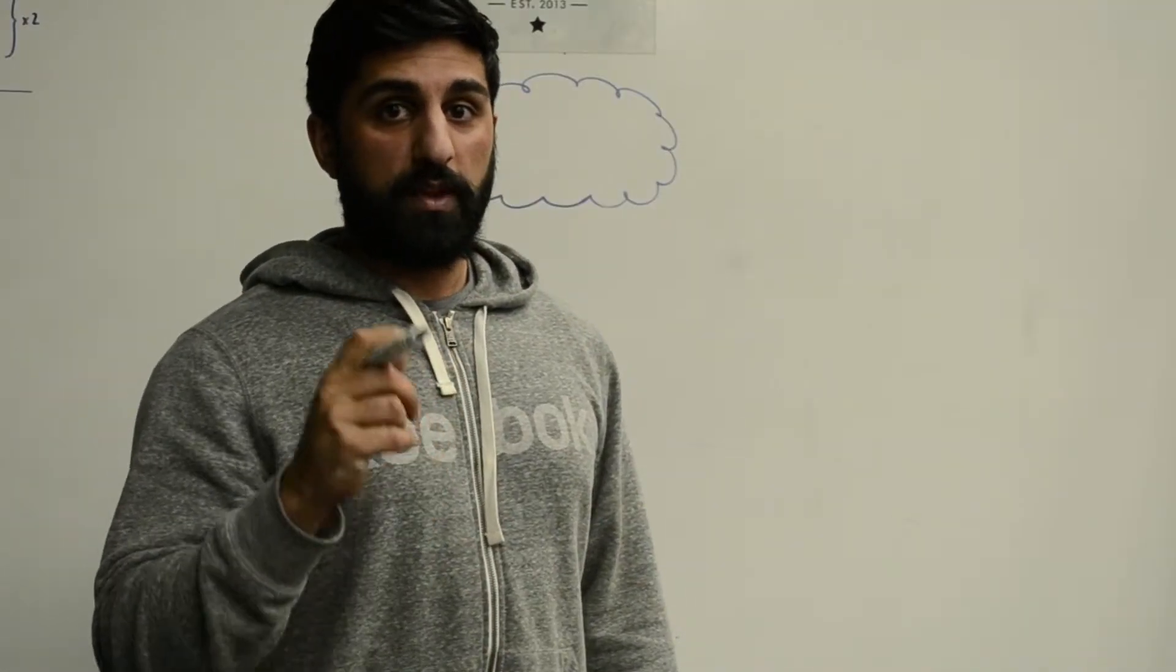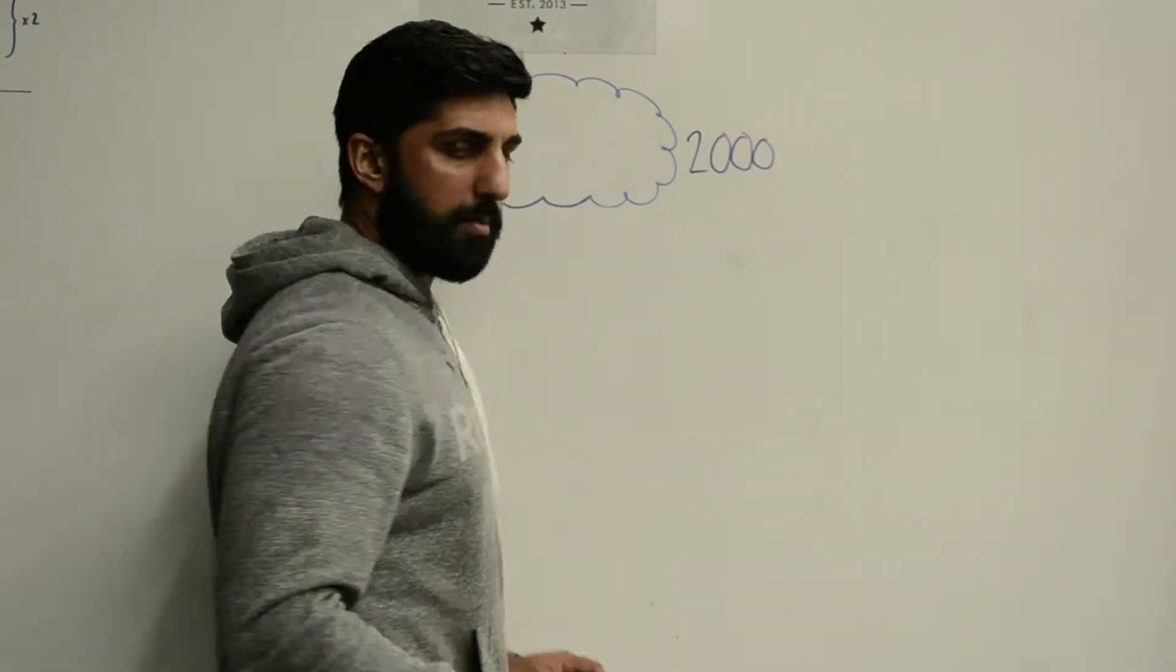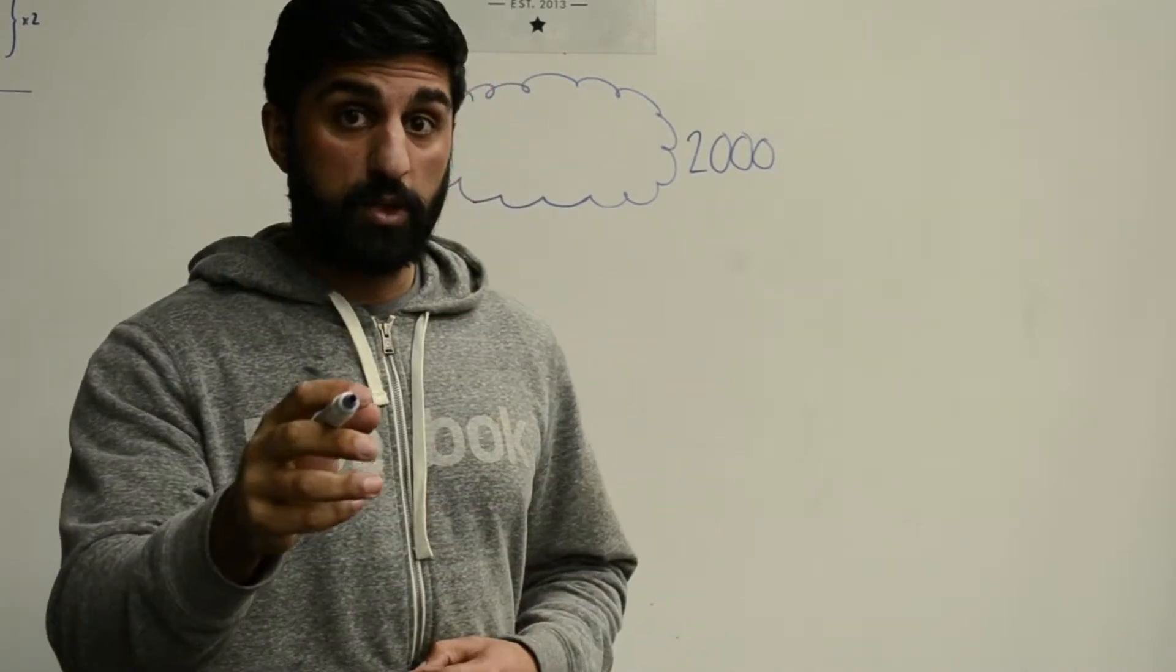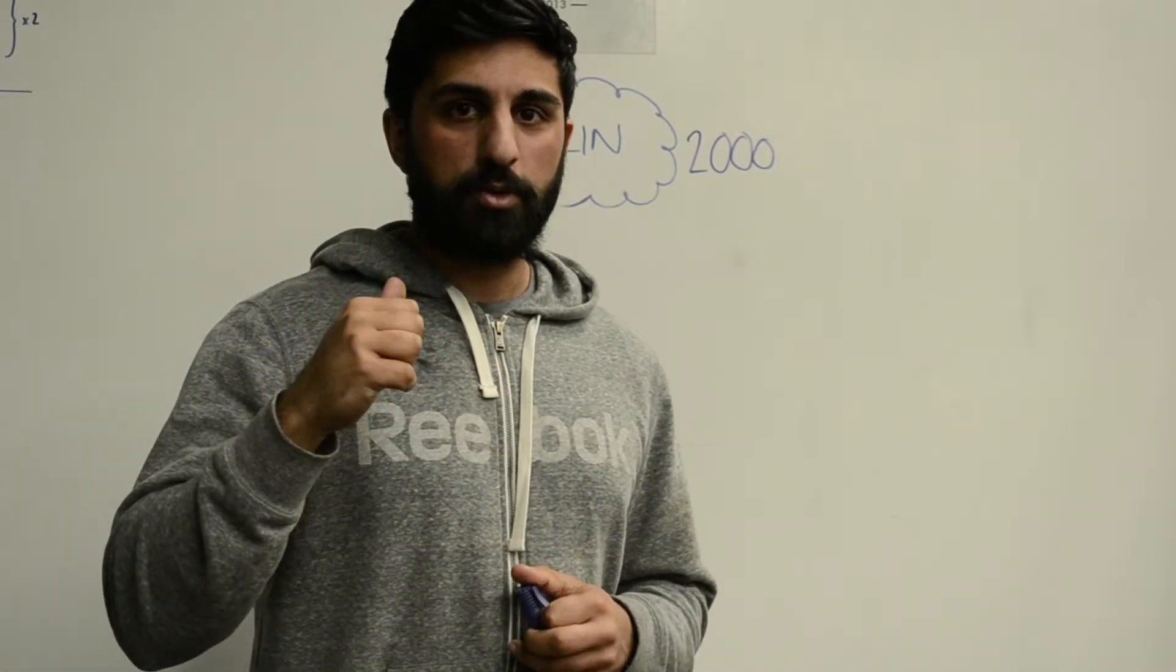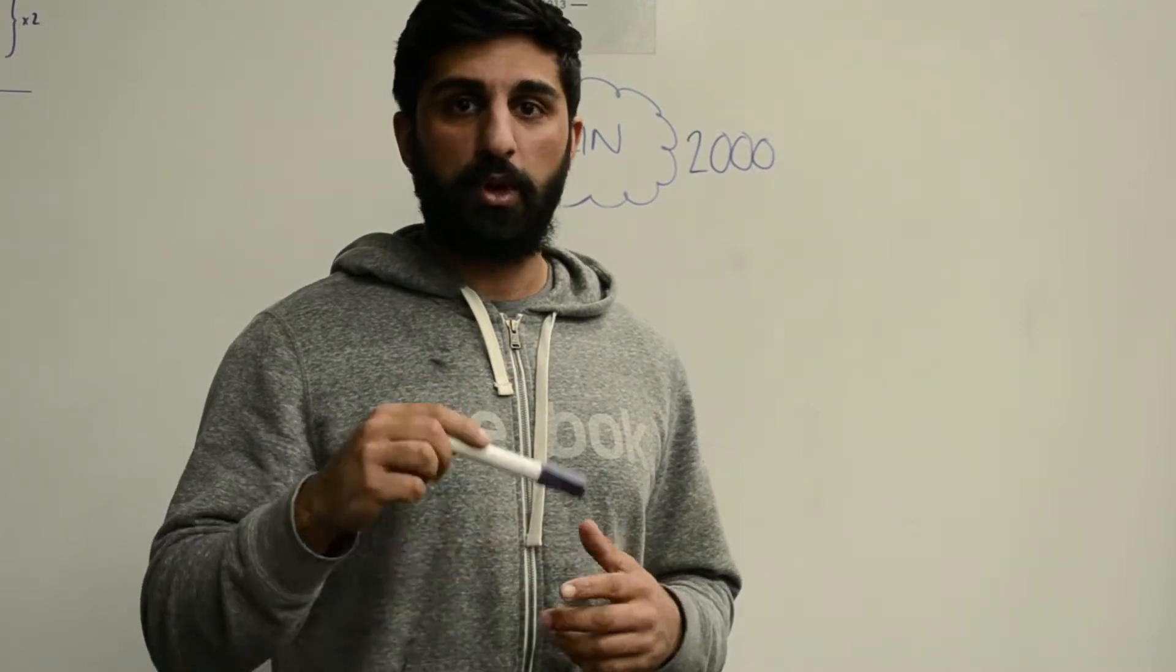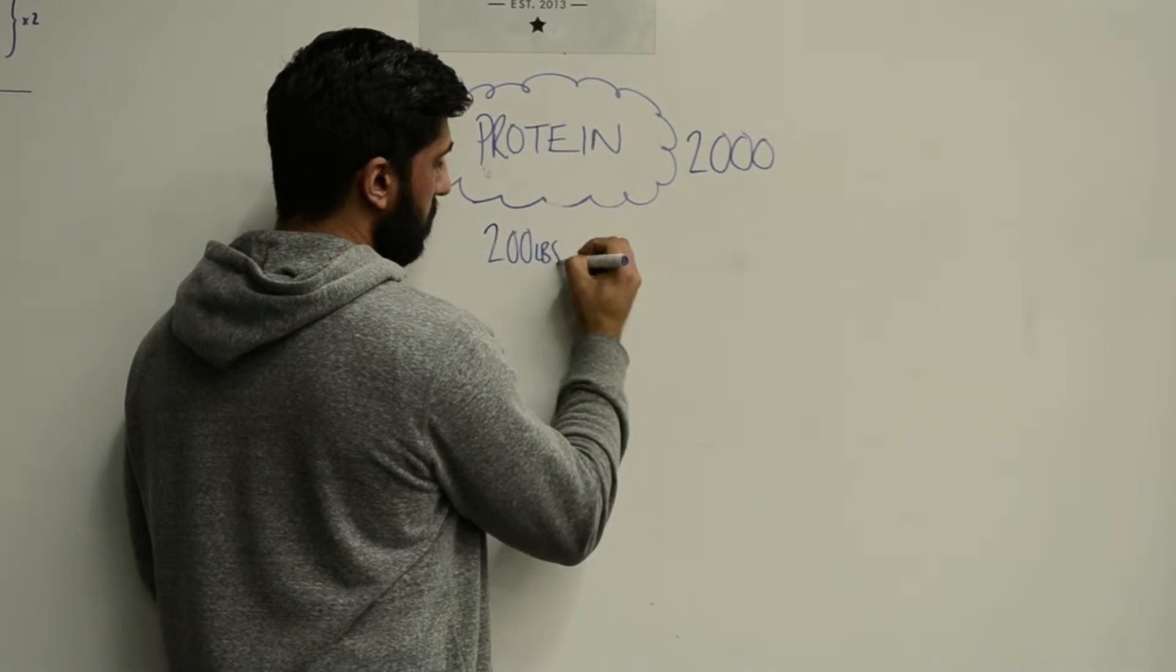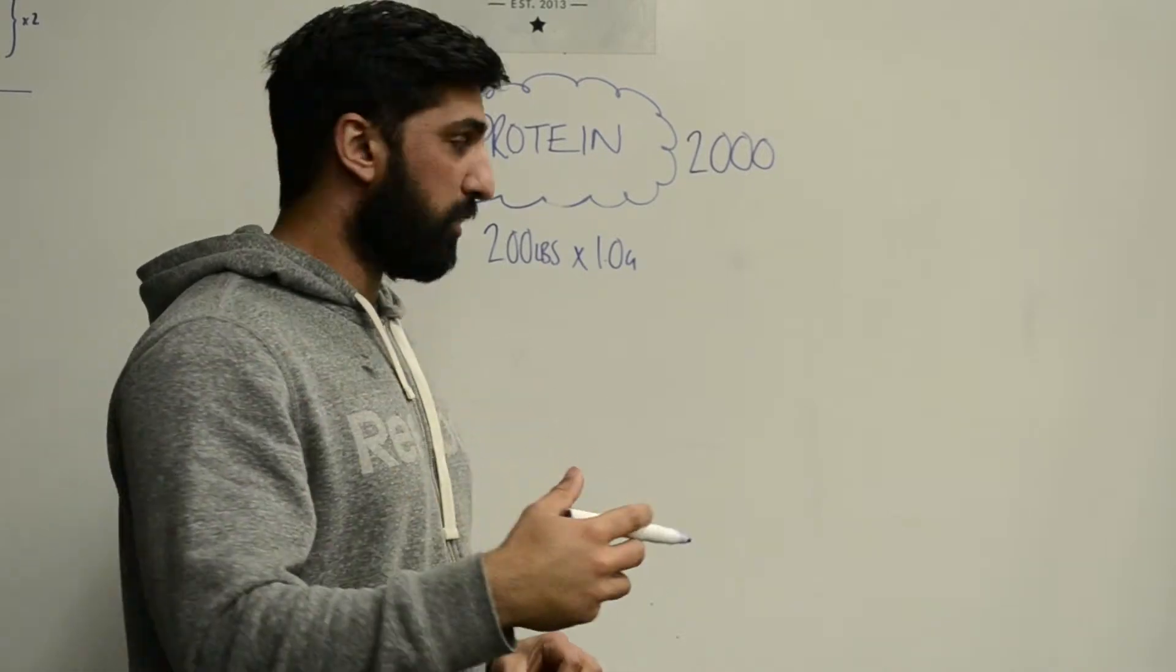The next thing that you need to work out after you've got your calories is your protein. To work out your protein, you're going to multiply your body weight in pounds by 0.8 to 1 gram. To keep it simple, let's just multiply your body weight in pounds by 1 gram of protein. If somebody weighs 200 pounds and we times that by 1 gram of protein, so they eat 1 gram of protein for every pound of body weight...